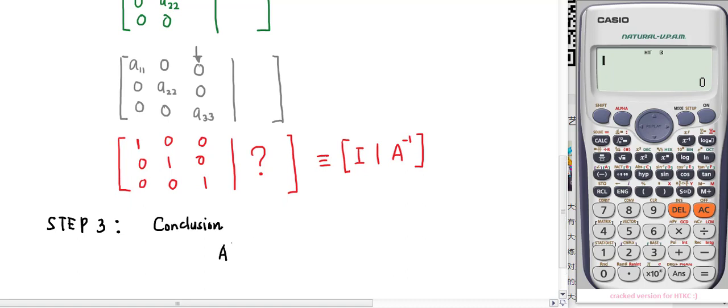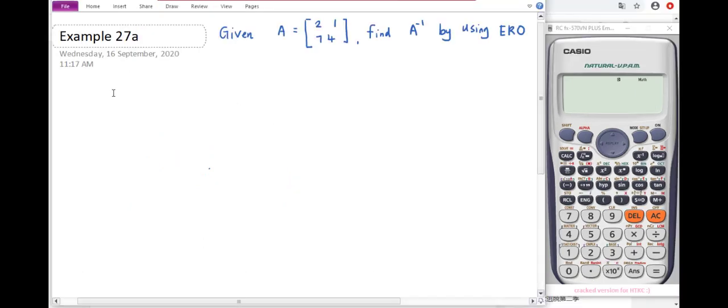Let's proceed to an exercise from the lecture notes. Example 27a: Given matrix A is a 2 by 2 matrix, so there are 2 rows and 4 columns. Start with the first column—we're locking the 2 and would like to change the 7 to become zero.